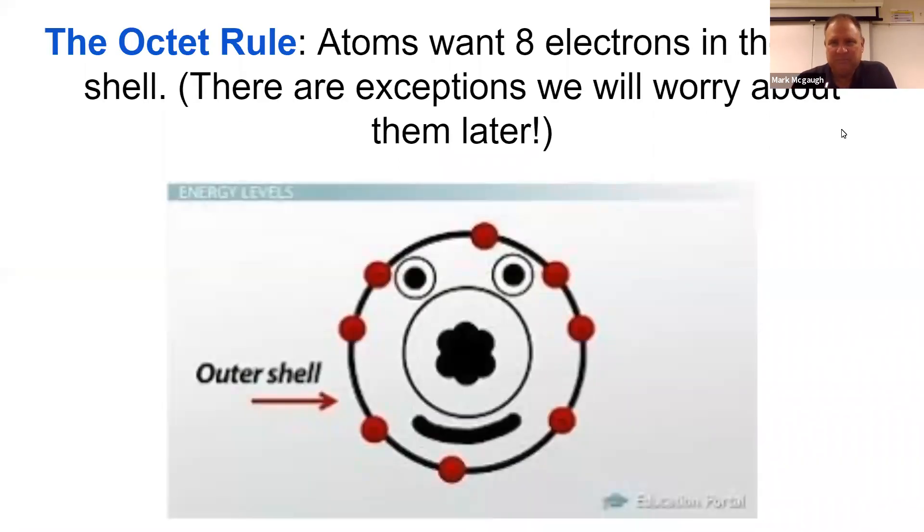Now octet rule, you don't need to know the name octet rule, you need to know what it means. Atoms want eight electrons in their outer shell. Atoms want eight valence electrons with a couple of exceptions.